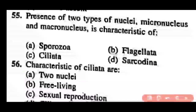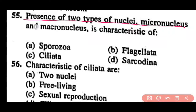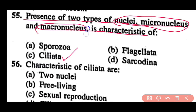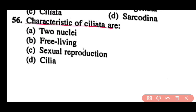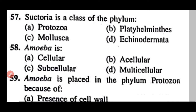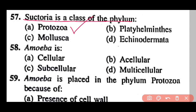Question 55: The presence of two types of nuclei — micronucleus and macronucleus — is characteristic of Sporozoa, Flagellata, Ciliata, or Sarcodina? Correct answer is option C. Ciliates have two types of nuclei: micronucleus and macronucleus. Micronucleus plays an important role in reproduction while macronucleus is vegetative. Question 56: Characteristics of Ciliata are two nuclei, free-living, sexual reproduction, and cilia (option A). Question 57: Suctoria is a class of phylum Protozoa (option A).